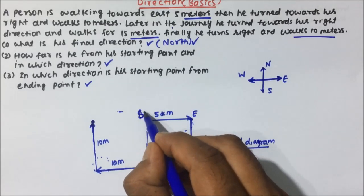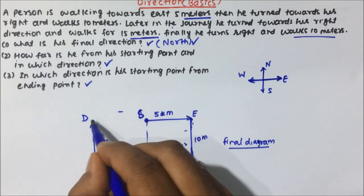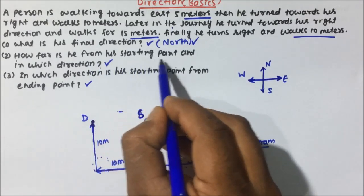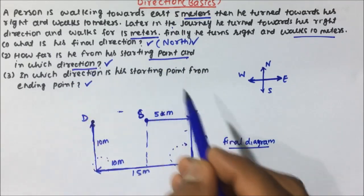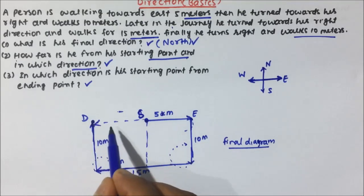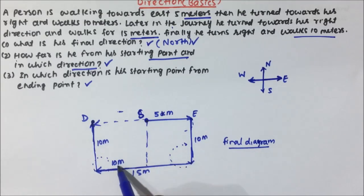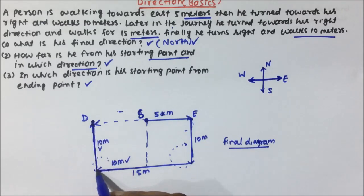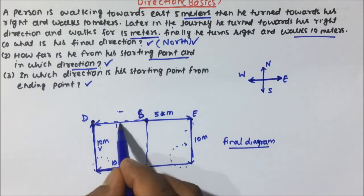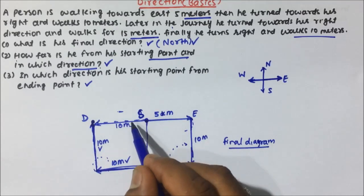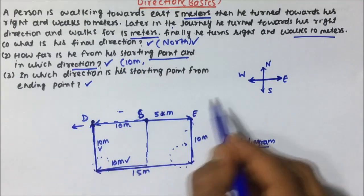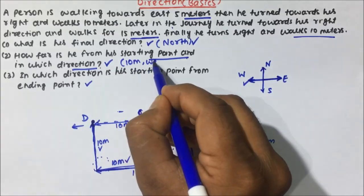The person has started from the starting point and has finally reached the destination. Now, how far is he from his starting point and in which direction? From the starting point, if you look, the person is 10 meters away — this distance is 10 meters and this distance is also 10 meters. So from the starting point, looking at the parallel distance, this will be 10 meters. The person is 10 meters away and in the west direction.